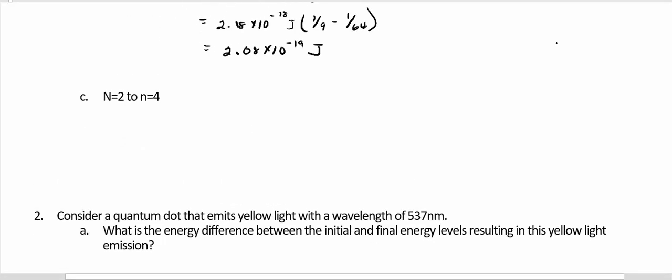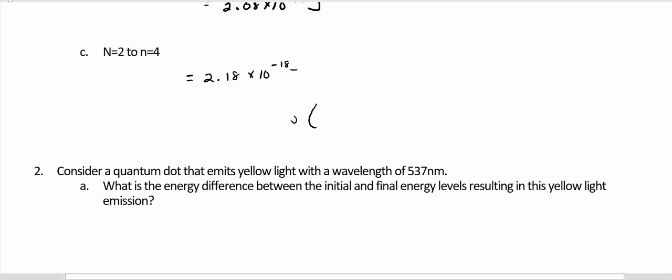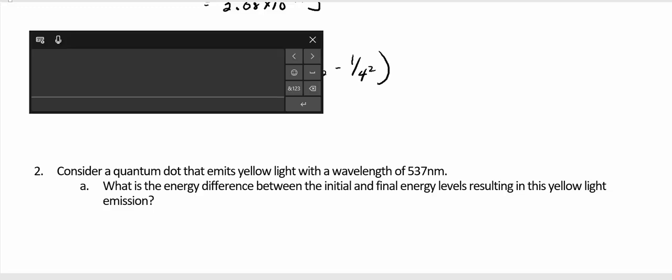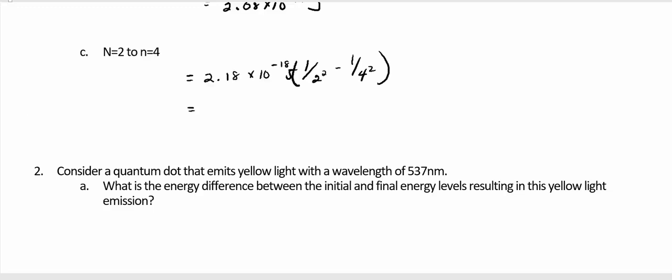And for C, from n equals 2 to n equals 4, same equation. This time, 1 over 2 squared minus 1 over 4 squared. And that gives me an energy of 4.09 times 10 to the negative 19 joules.